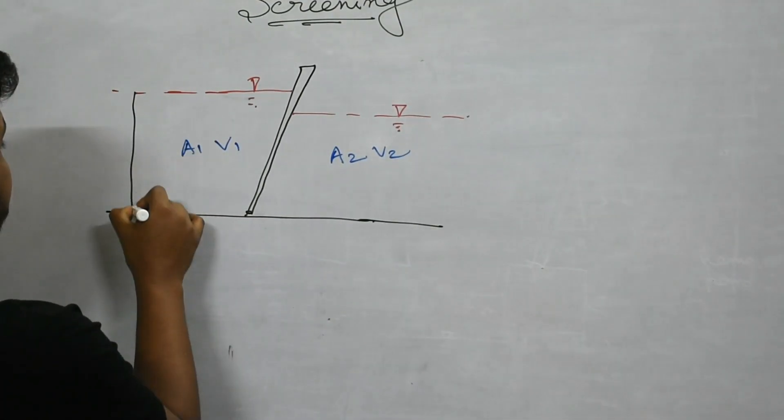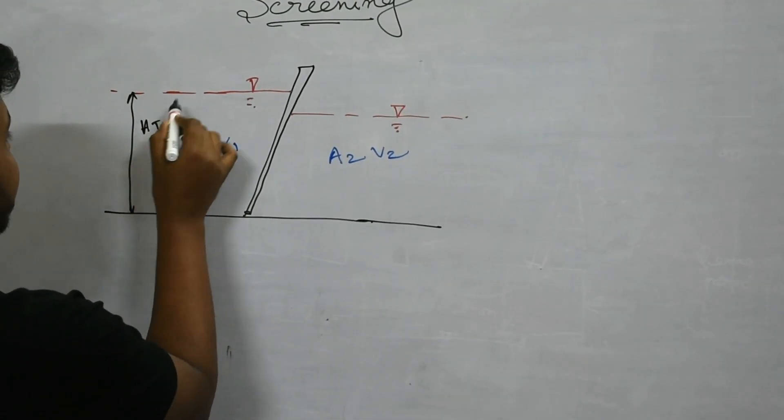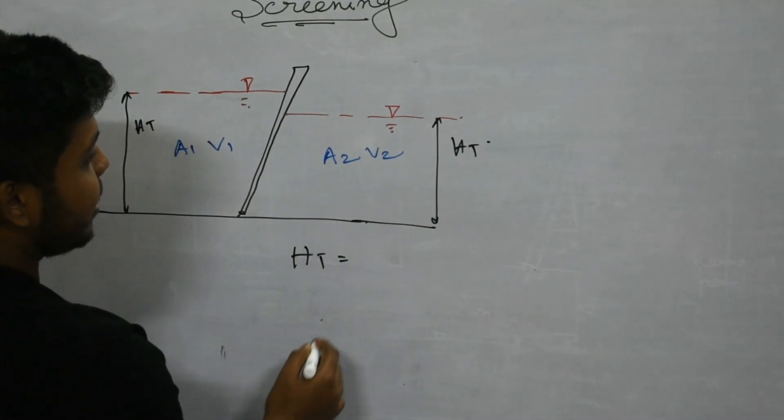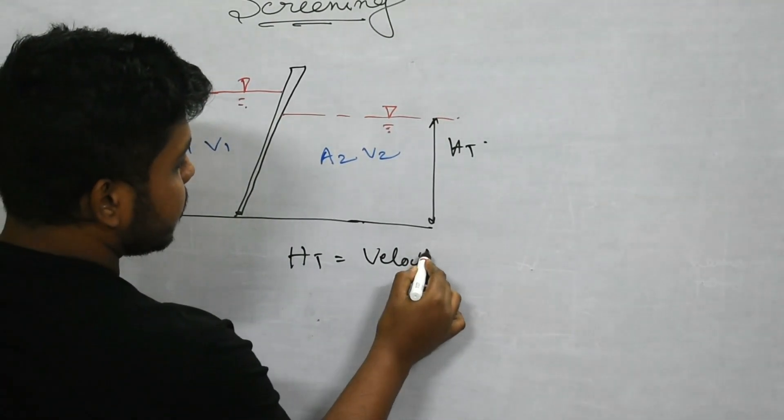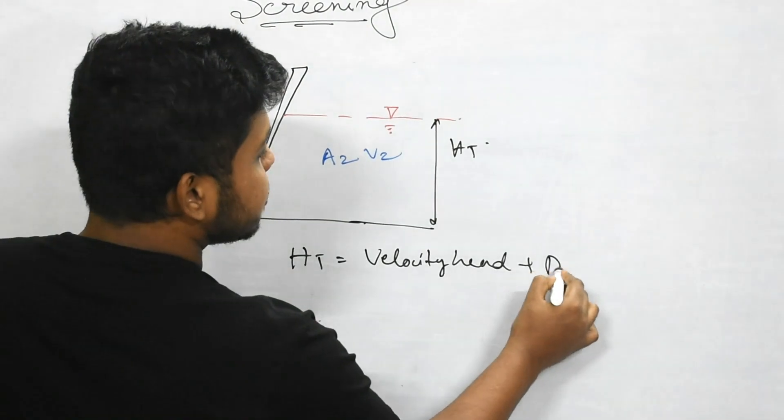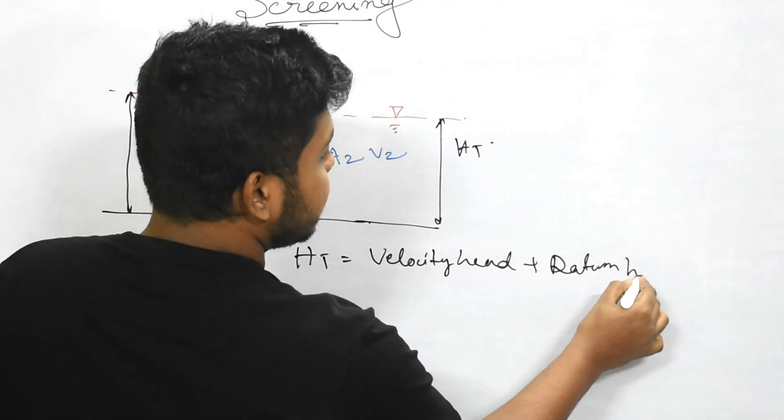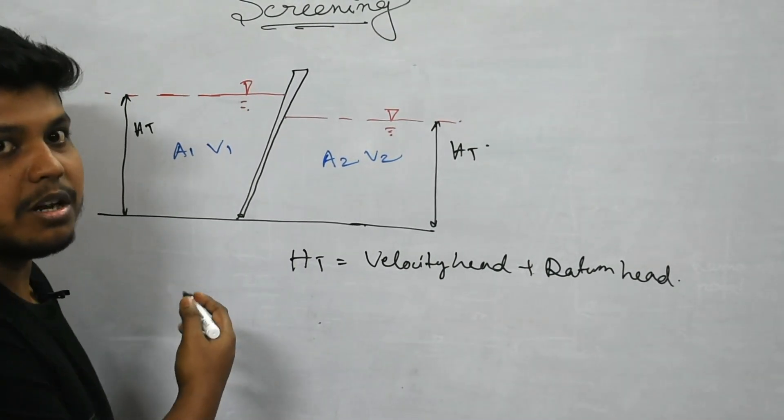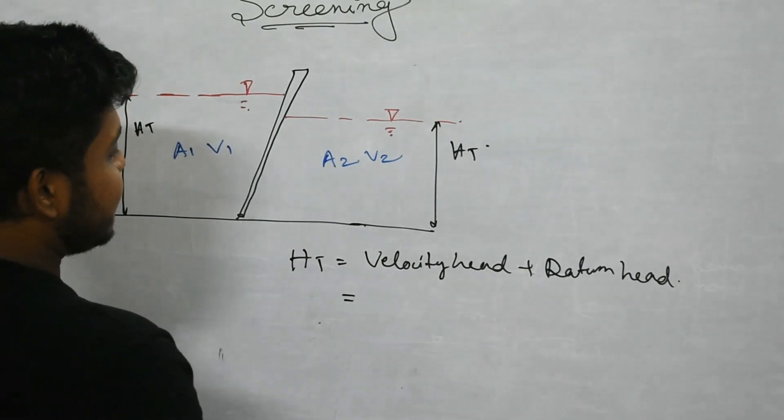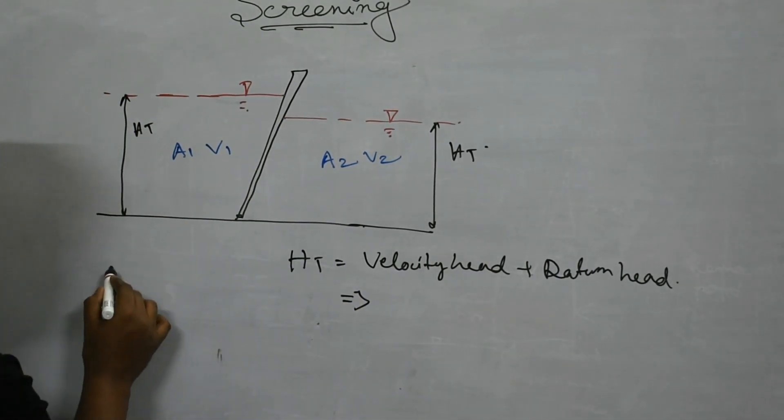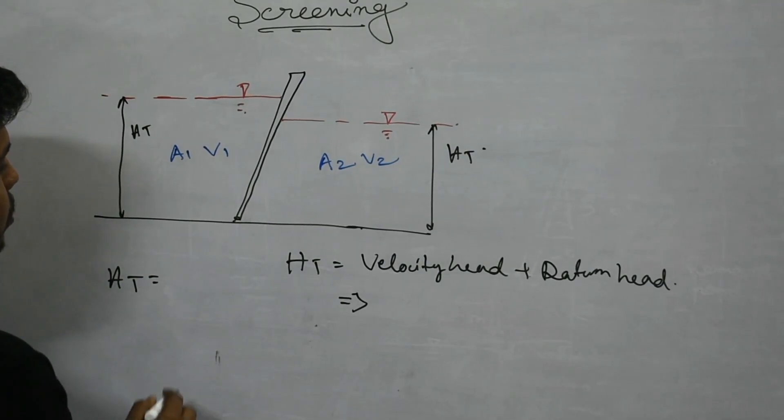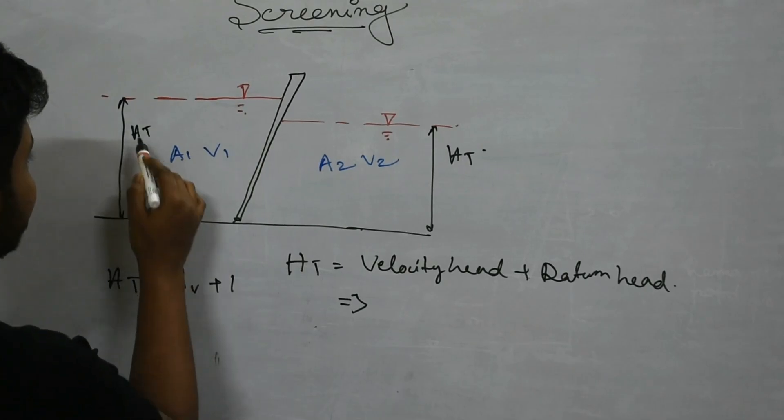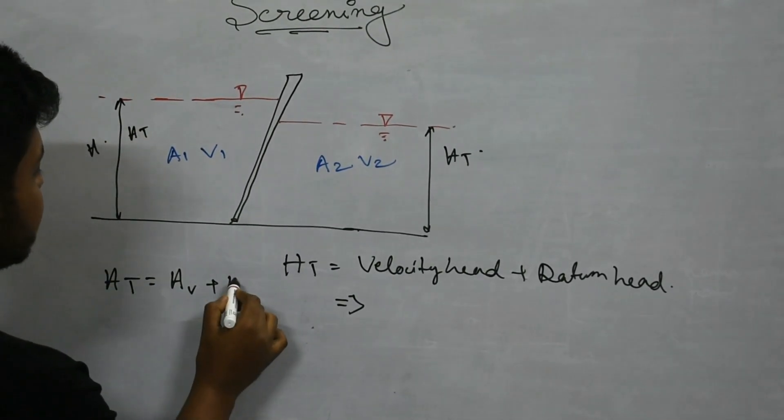Now this is the total head and here this is the total head. In this case the total head is the summation of velocity head plus datum head as there is no pressure here because no external pressure is applied. For this case ht equals velocity head hv plus datum head, if this height is h1 and this is h2.